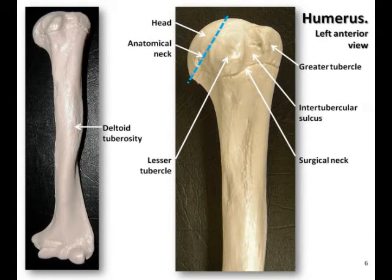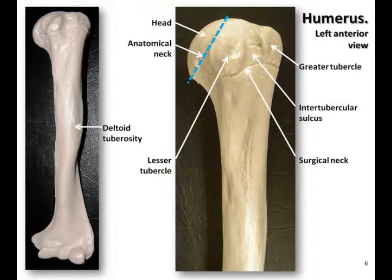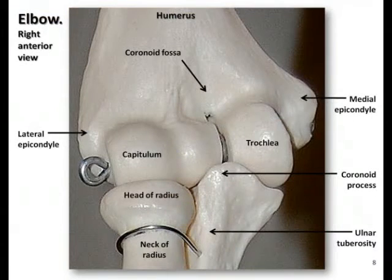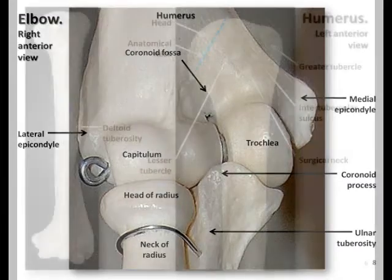The humerus is the upper arm bone in the brachial region, and it's the largest and longest bone of the arm. It articulates with the scapula on its proximal end, and with the radius and ulna on its distal end to form the elbow joint.